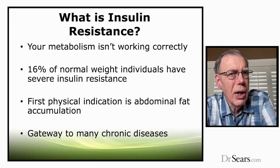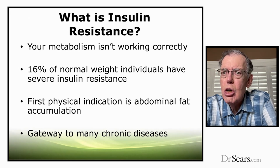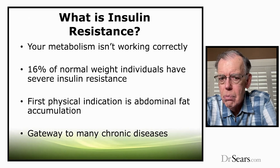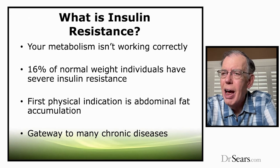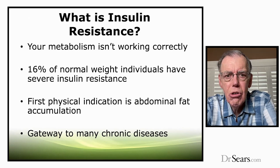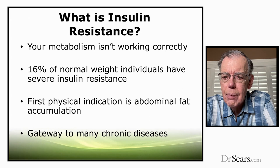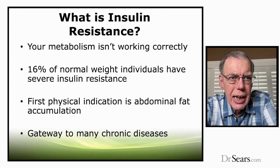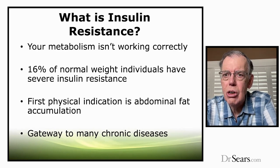This begins to beg the question: what exactly is insulin resistance? Insulin resistance is when your metabolism is not working correctly. How can you tell? You can't look at a person, because 16% of normal weight individuals have severe insulin resistance. But usually the first physical indication that you have insulin resistance is the accumulation of abdominal fat, also known as belly fat — and that is a gateway toward many chronic disease states.